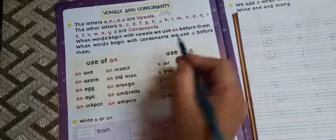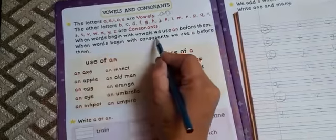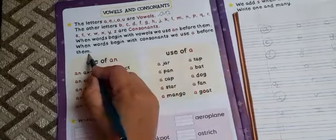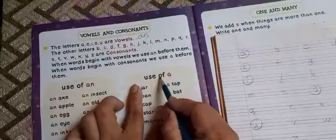Now, next one. When words begin with consonants, we use a before them. See example of use of a.